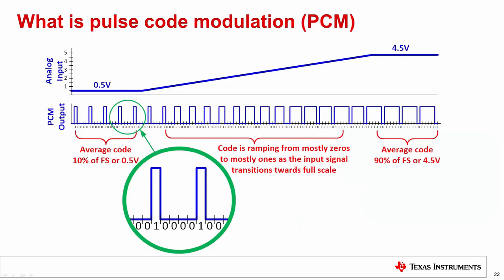This slide shows a pulse-code modulation example. The occurrence of ones and zeros relates to the analog input level — for low analog inputs, the PCM bits are mostly logic zeros; for high analog inputs, they are mostly logic ones. Averaging the PCM bit stream is done by adding the ones and zeros and dividing by the number of bits averaged. Considering the earlier example, 16,000 bits would be averaged to produce one output sample, output at 1 MHz. Now let's take a closer look at how the modulator converts its analog input to a PCM output.